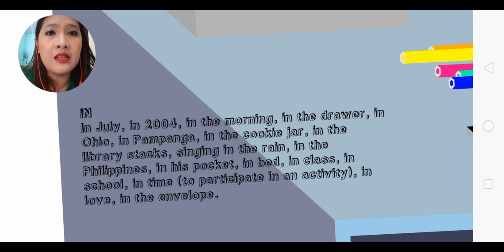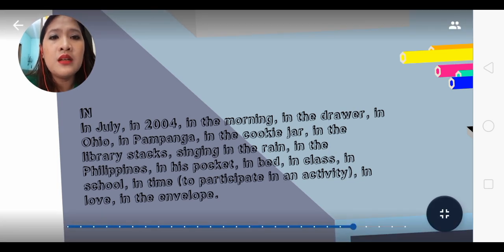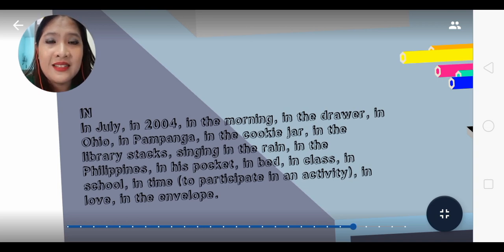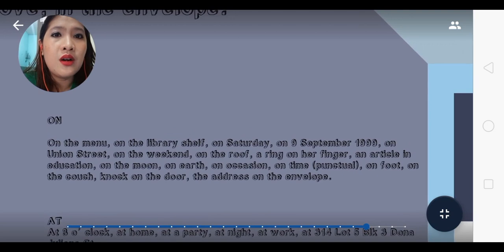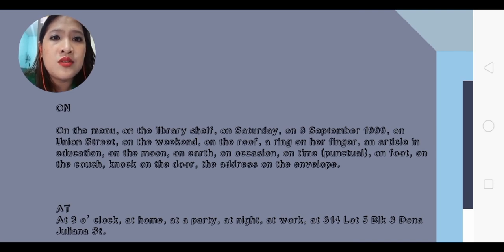Let's revisit 'in' — used for something broad in time or place: in July, in 2004, in the morning, in the drawer, in Ohio, in Pampanga, in the cookie jar, in the library stacks, singing in the rain, in the Philippines, in his pocket, in bed, in class, in school, in time, in love, in the envelope — inside or within boundaries. For 'on' — on the surface or exact time: on the menu, on the library shelf, on Saturday, on September 9 1999, on Union Street, on the weekend, on the roof, a ring on her finger, on the moon, on earth.